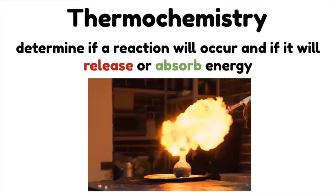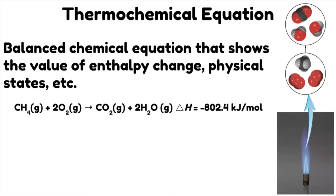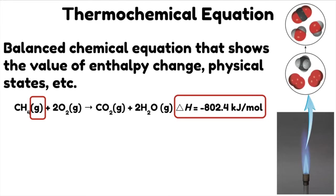To do that, we need to be familiar with the thermochemical equation. A thermochemical equation is a balanced chemical equation in which the exact value of enthalpy change, physical states, and the number of moles of reactants and products are specified. For example, this is the thermochemical equation for the combustion of methane — you have the enthalpy change, the physical states (all reactants and products are gases), and the stoichiometric coefficients.